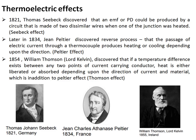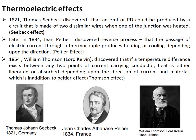The Seebeck and Peltier effects involve two dissimilar metals, whereas the Thomson effect is in a single homogeneous metal. To understand the Seebeck effect, we will consider an aluminum rod that is heated at one end and cooled at the other end.